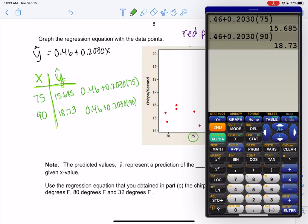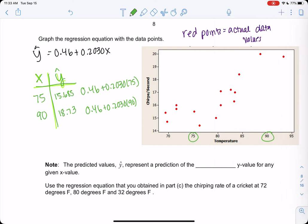And two points is enough to graph a line. If you want to do one more you're welcome to, but two is enough. We're just going to estimate, so 75 and 15.6 would be about right there, and then 90 is about 18.73, so that would be a little under 19. Then connect them to make a line.